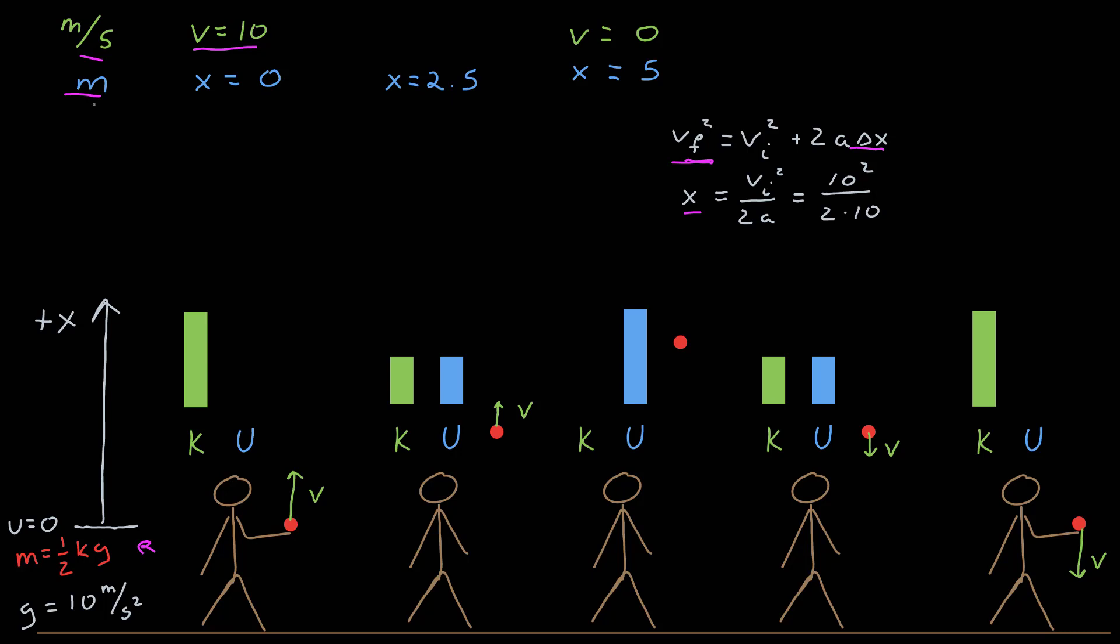If I look halfway to the top, then x equals 2.5 meters, and I can again use kinematics to find the velocity. Using the same expression, v initial is 10 squared, and at this point we have 2 times negative 10 is the acceleration times 2.5 meters. I get 100 minus 50, or v final is the square root of 50, which is about 7.07. Then, of course, on the way back down, the position and speeds are the same. The velocity is just going in the opposite direction.